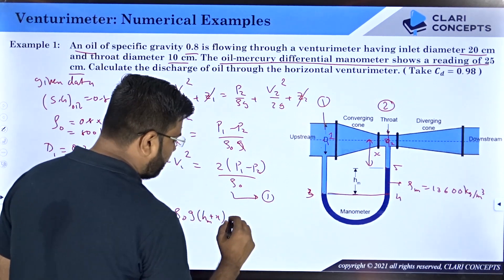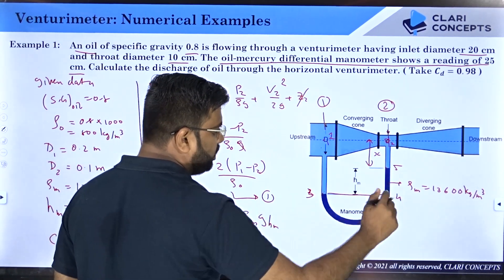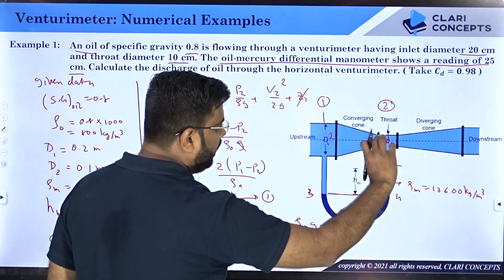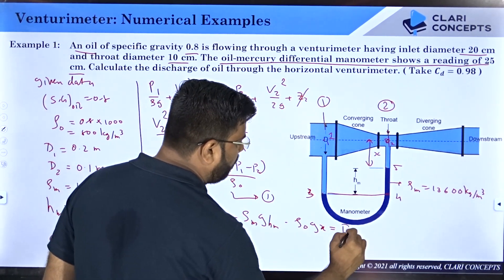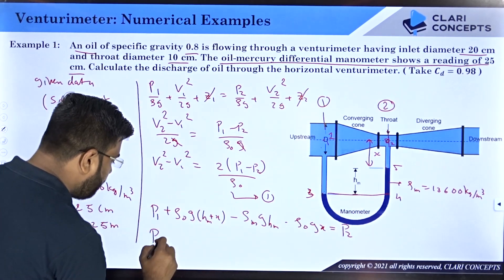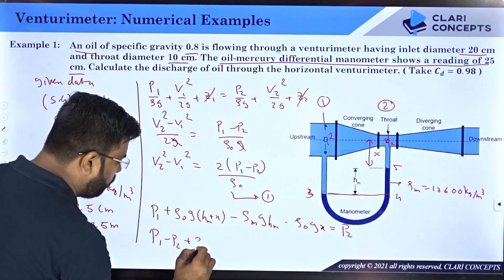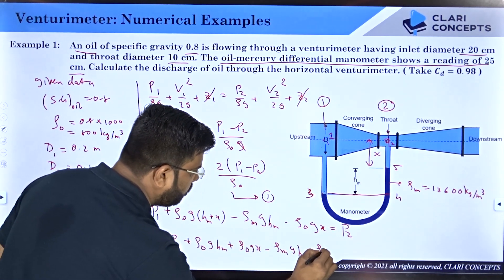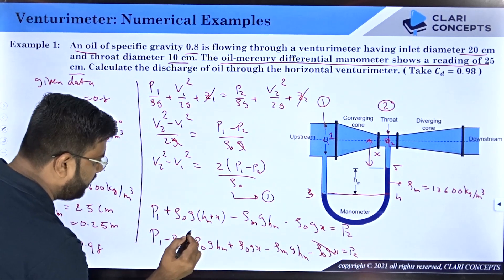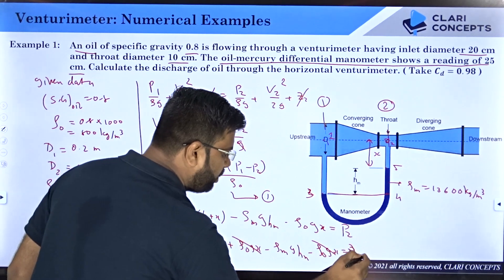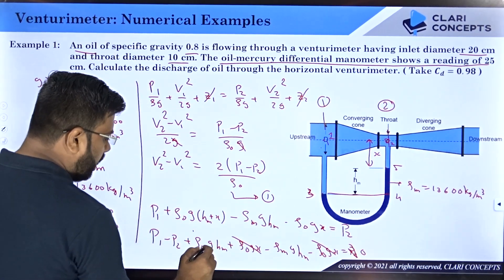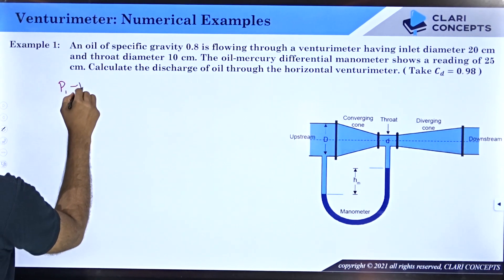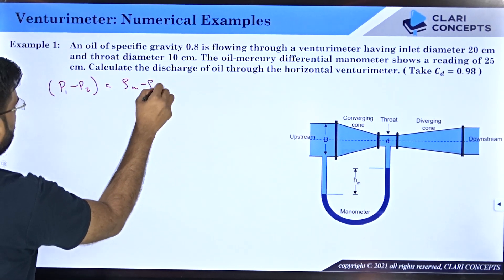From point 4 to 5, pressure decreases by ρ_m × g × h_m (mercury column). From point 5 to 2, pressure decreases by ρ_oil × g × x. Setting this equal to p2 and rearranging, the ρ_oil × g × x terms cancel, leaving: p1 − p2 = (ρ_m − ρ_oil) × g × h_m.